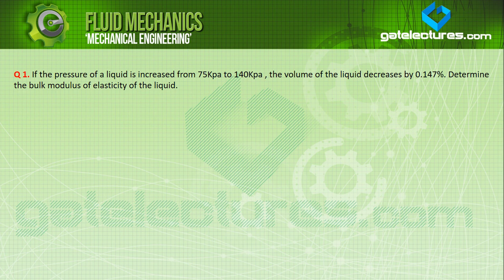We have to recall the last lecture. Compressibility is the property of fluid which we define as the reciprocal of bulk modulus. Bulk modulus is the reciprocal of compressibility. We have to see how to solve the numerical approach.